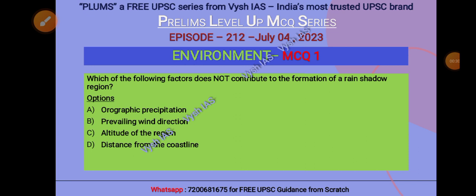Let us start. The first question: which of the following factors does NOT contribute to the formation of a rain shadow region? You must be knowing what a rain shadow region is. The options are: A) orographic precipitation, B) prevailing wind direction, C) altitude of the region,